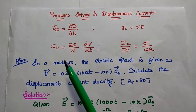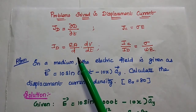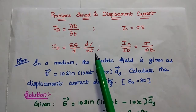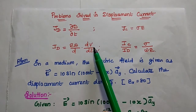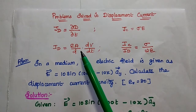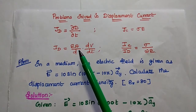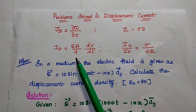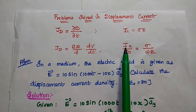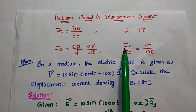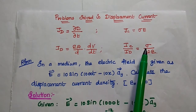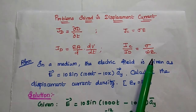The displacement current can be obtained by using the formula epsilon times A divided by D, multiplied by DV/DT, where V represents voltage, A is the area, epsilon is the dielectric constant, and D is the separation between the two plates. There is one more relation: the ratio of conduction current to displacement current is equal to sigma divided by omega epsilon.